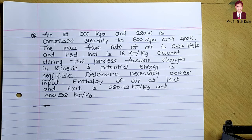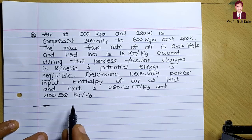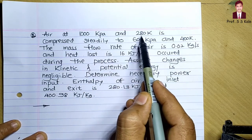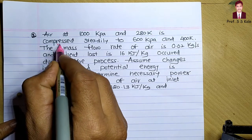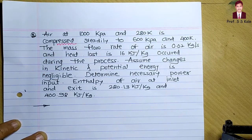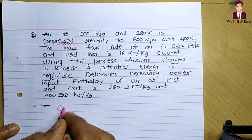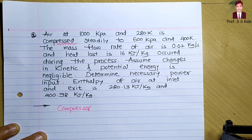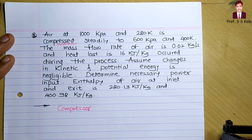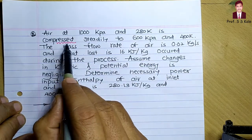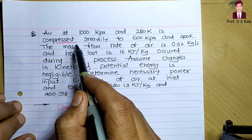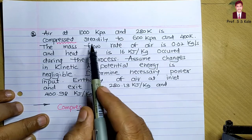You have to read the problem very carefully so that you can understand it in a better way. Solving a problem doesn't require too much skill, but understanding a problem requires good skill. Air at 1000 kilopascal and 280 Kelvin is compressed steadily — from which we can understand that the application we are going to use is a compressor. So the steady flow energy equation is applied for the compressor.